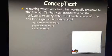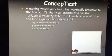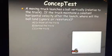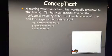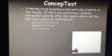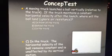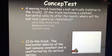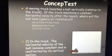The moving truck launches the ball vertically relative to the truck. If the truck maintains its constant horizontal velocity after the ball's launch, where will the ball land — ignoring air resistance? The correct answer is C. In the truck scenario, the horizontal velocity of the ball remains constant and is unaffected by its vertical motion.